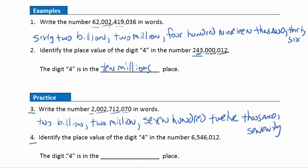Question four: identify the place value of the digit four in this number. Here's my digit four. It's in the thousands period, and in that period it's in the tens place of that, so that's going to be the ten thousands place.